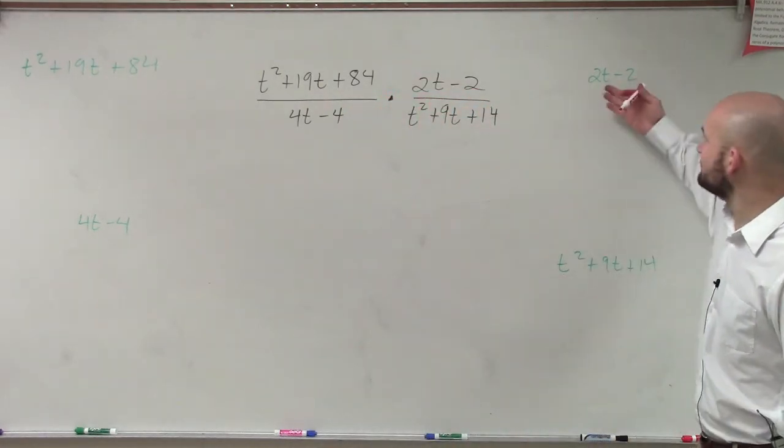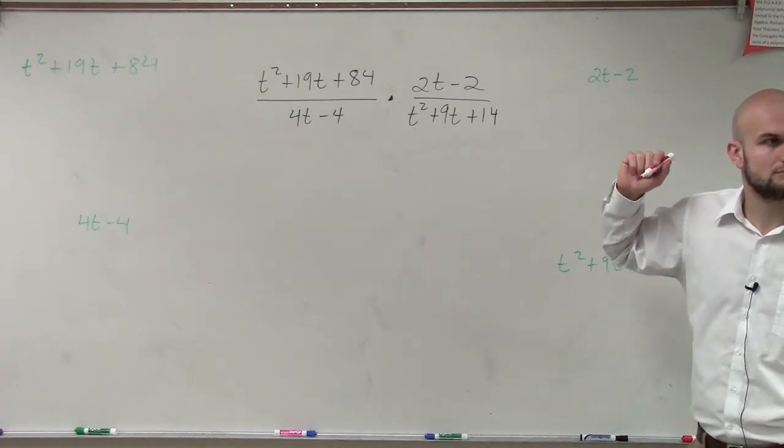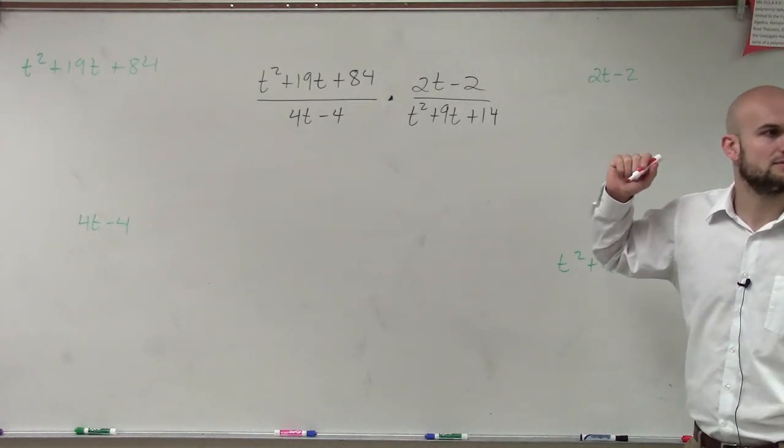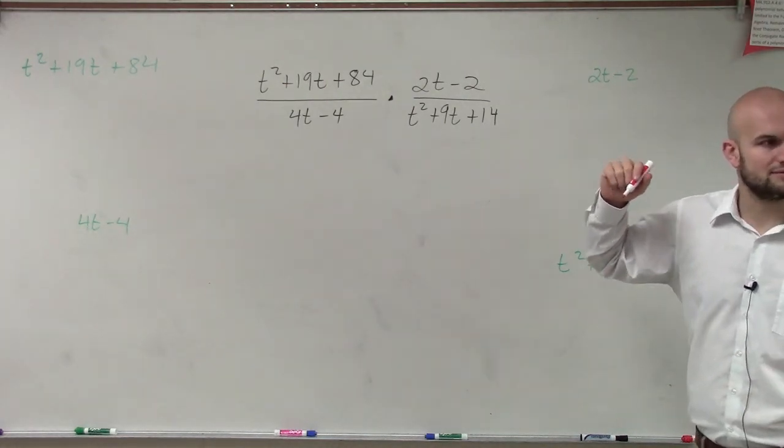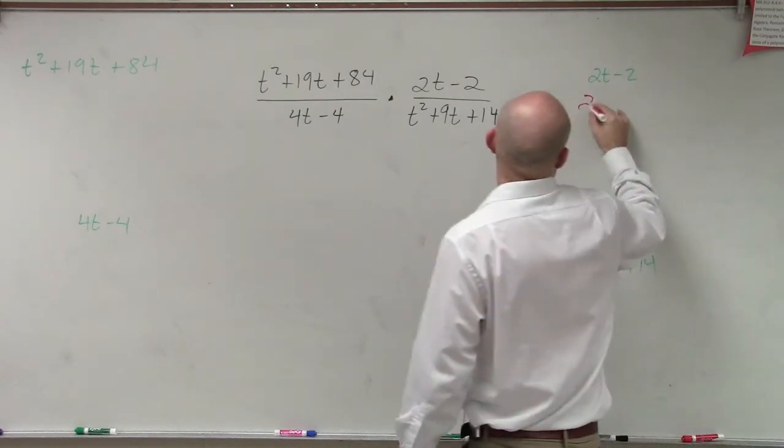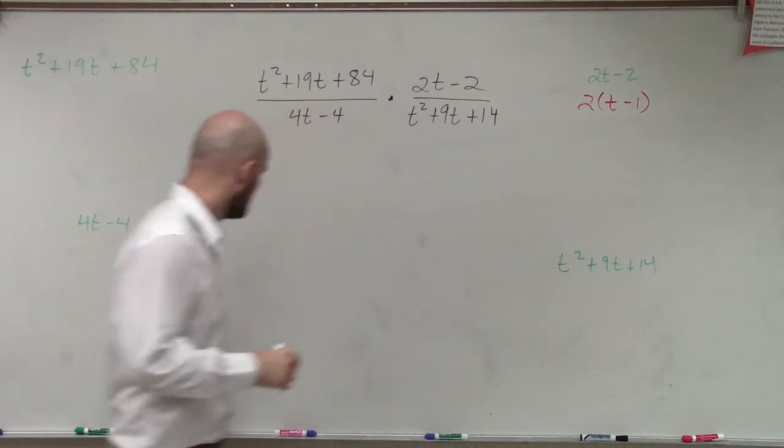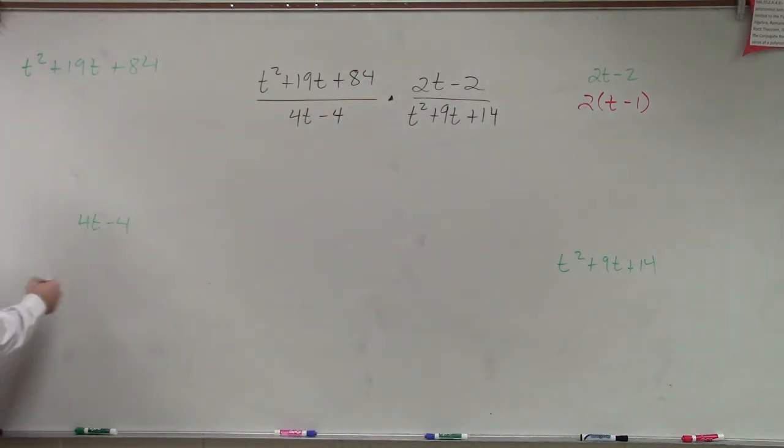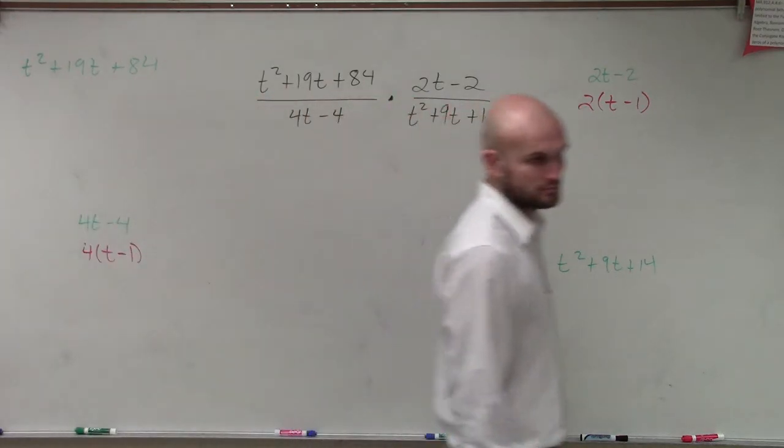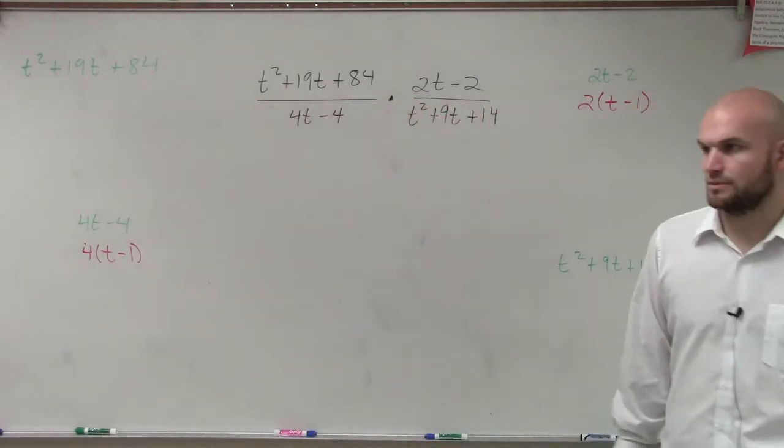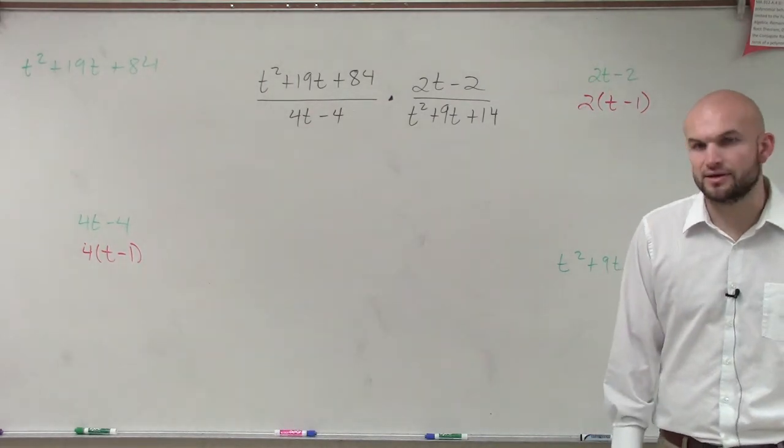Can I factor 2t minus 2? I can factor that to a factor out a 2. So I'm left with a t minus 1. Over here, I can factor out a 4. So then that's a t minus 1. Does everybody follow me on that? Pretty basic right there.